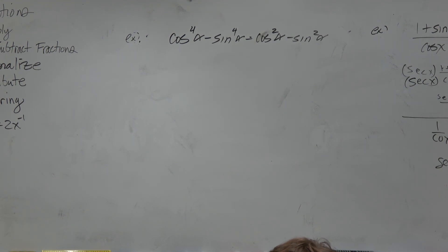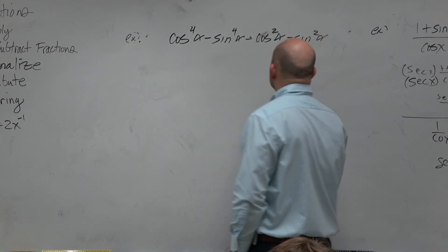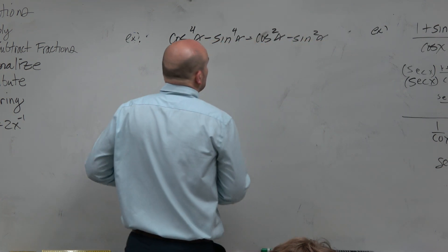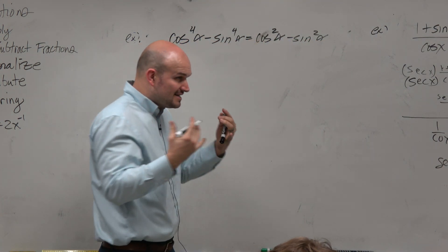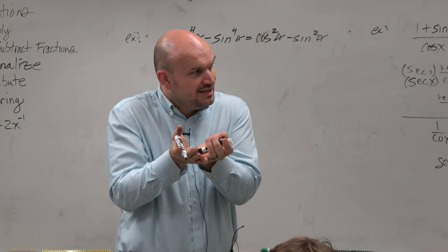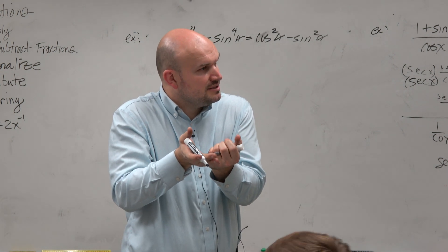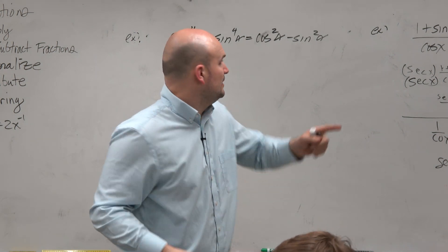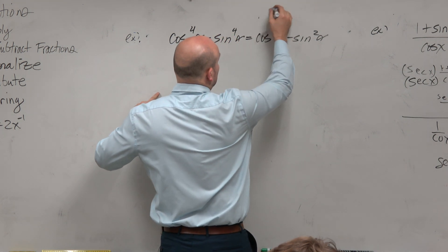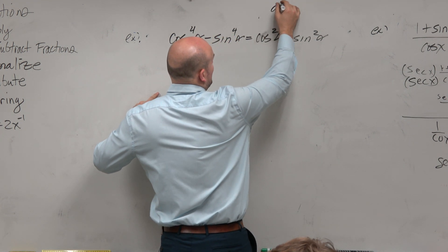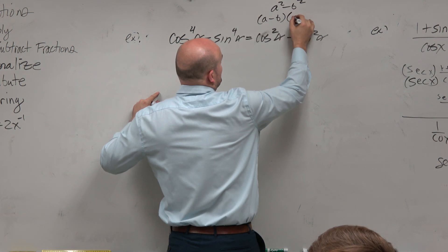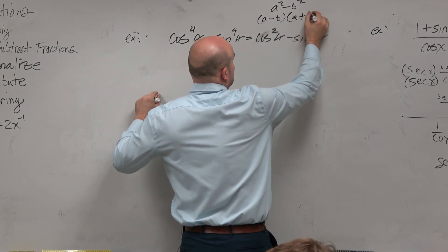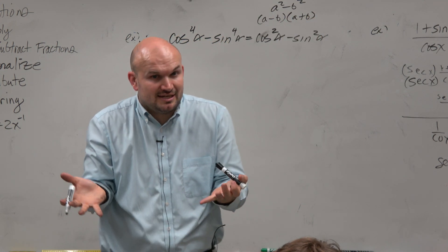So I have cosine to the fourth alpha minus sine to the fourth alpha equals cosine squared of alpha minus sine squared alpha. Now, the important thing I see here, or what I recognize, is that difference of two squares relationship. I at least see a difference of two squares here — this a squared minus b squared. I know that can be factored into a minus b times a plus b. You've got to know all your factoring techniques.